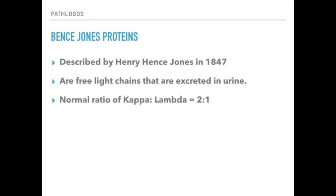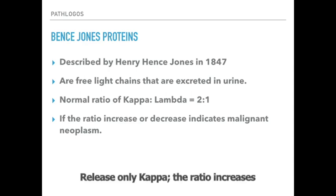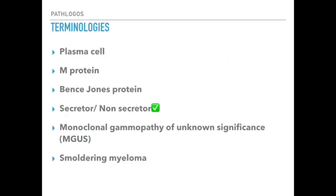The normal ratio of kappa to lambda in a normal patient is 2:1, and if the ratio increases or decreases, it indicates a malignant neoplasm. If only kappa is increased the ratio will increase, and if only lambda light chains are released the ratio will decrease. Because they have less molecular weight, they can easily pass the glomeruli.